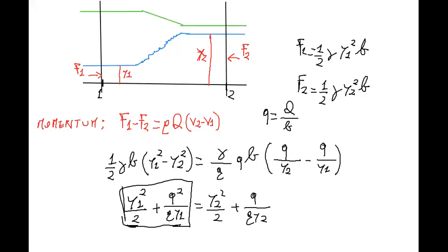After some math, conservation of momentum can be rewritten in this way: y2 over y1 equals one over two times minus one plus square root of one plus 8 FR in section one squared.